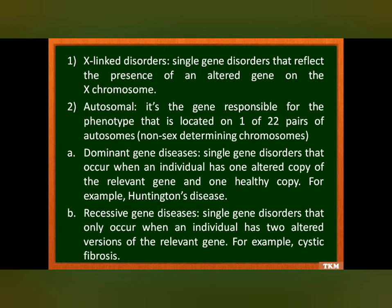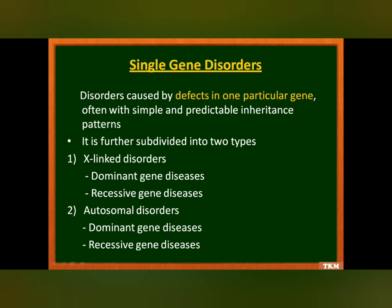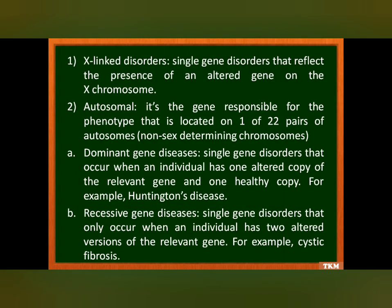An X-linked disorder is a single gene disorder that reflects the presence of an altered gene on the X chromosome. Autosomal refers to a gene responsible for a phenotype that is located on one of the 22 pairs of autosomes — the non-sex-determining chromosomes. These are further divided into dominant and recessive. A dominant single gene disorder occurs when an individual has one altered copy of the relevant gene and one healthy copy — for example, Huntington's disease. A recessive gene disorder occurs when an individual has two altered versions of the relevant gene — for example, Cystic Fibrosis.